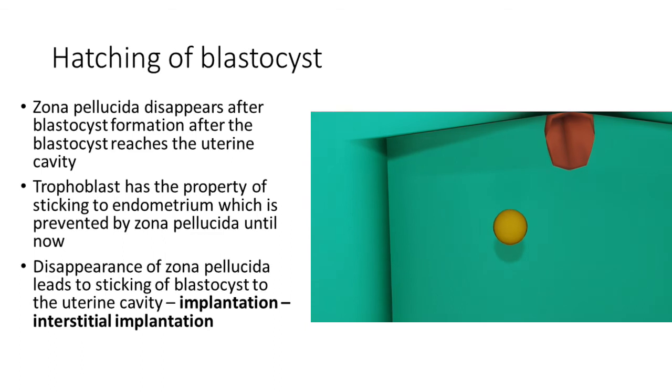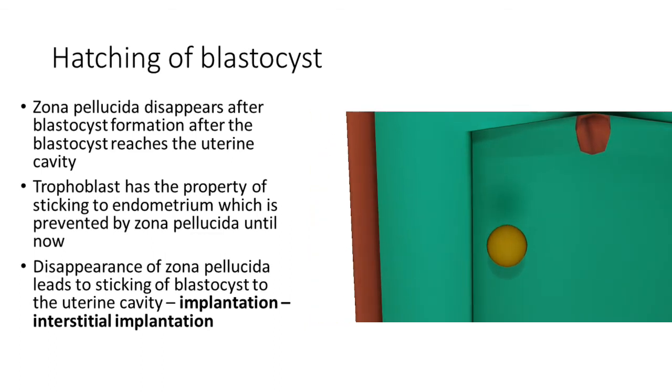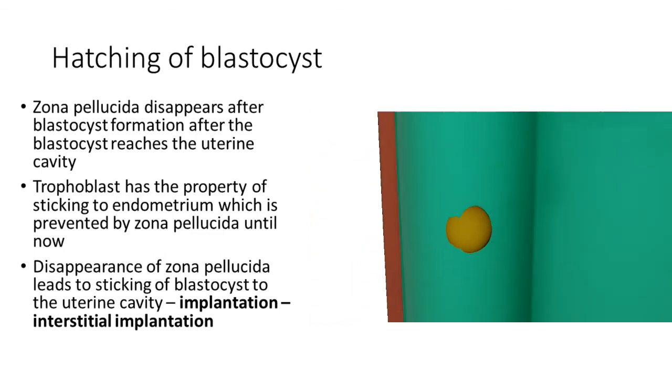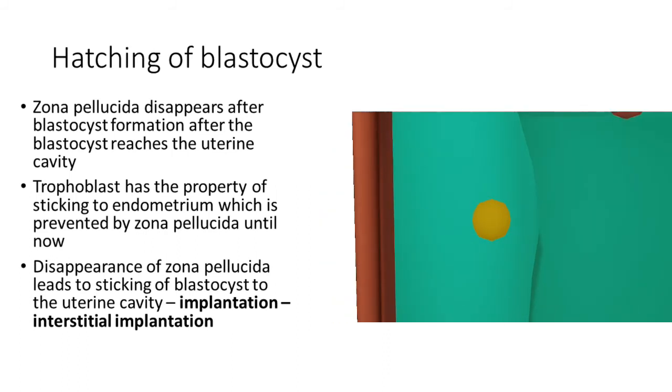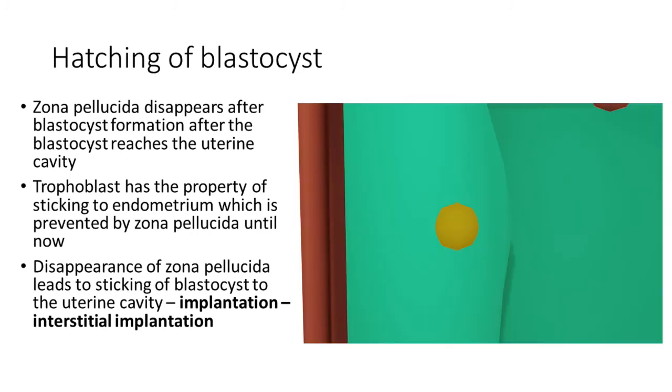It sticks to the endometrium. It not only sticks to the endometrium, it also burrows the endometrium and goes deep into the endometrium and lies there. This sticking is called implantation, and this burrowing and going deep into the endometrium and attaching there within the endometrium is called interstitial implantation.